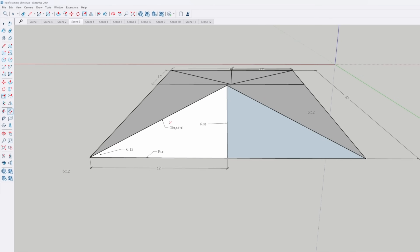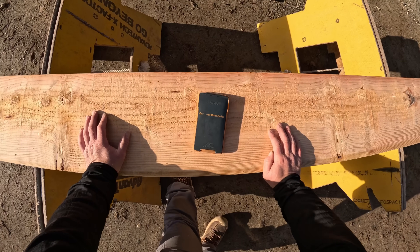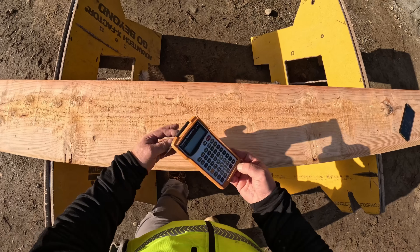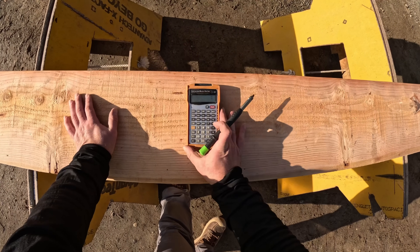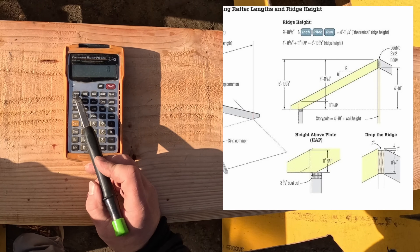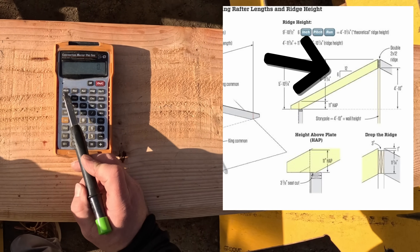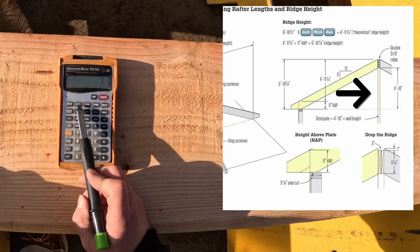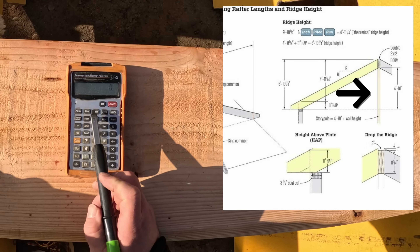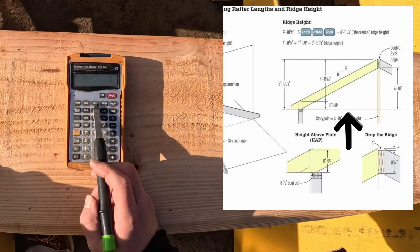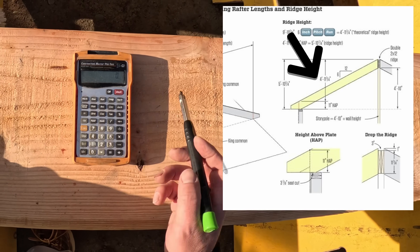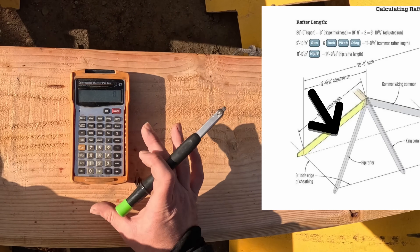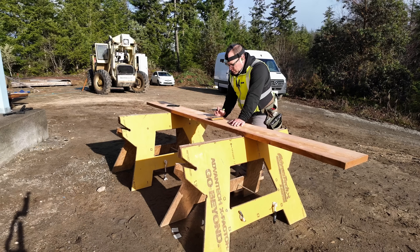Let's show you how to calculate on the calculator. That is the Construction Master calculator — this is the Pro Trig model. I suggest buying that because it gives you some options, but you do not need it. Starting at the top left, we have the pitch or slope of the roof. Typically you would see that called out on the plans as a 6/12, an 8/12, a 12/12. The rise is the vertical number — just think height or vertical. Run is the horizontal number. Diagonal would be the hypotenuse or the diagonal of the rafter. Hip and valley would be the hipped end. We really only need two numbers to calculate the rest, and we're almost always going to be given the pitch.